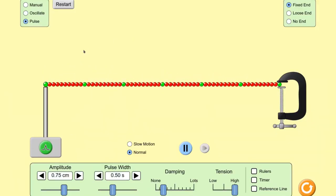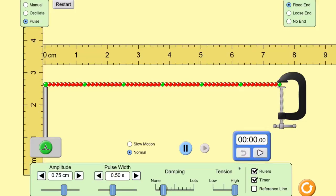For the first experiment, we'll leave it at the pulse setting. We keep the right end of the string fixed. We'll change that later. We also want to turn on the timer and set the rulers.